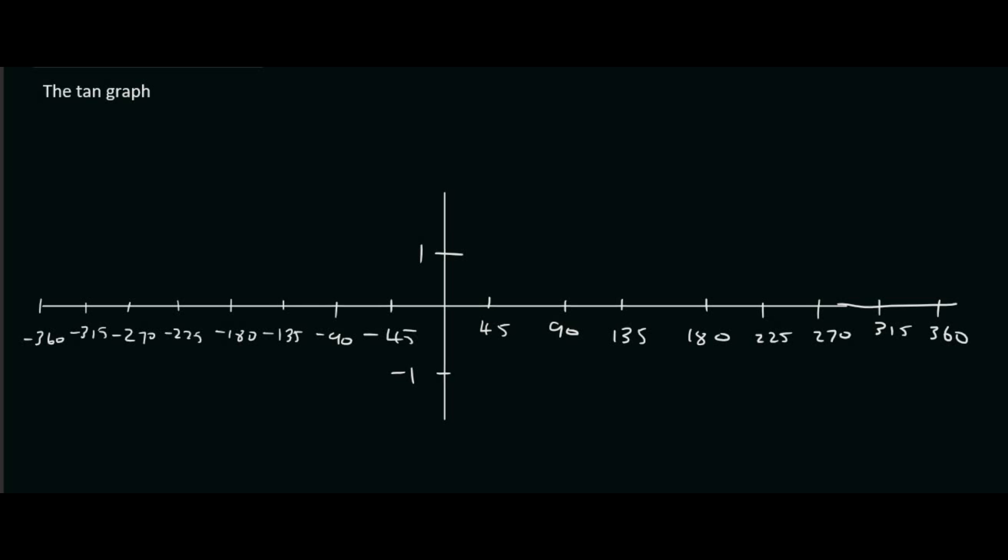So then once again we're going to call on our calculator and we're going to just type in the values. For example, I'm not going to show you the calculator this time. I'm sure you guys understand by now. We start off at 0 degrees which is over here. So you type in tan 0 on your calculator and you'll see that the answer will be 0. So we'll just put a dot right there.